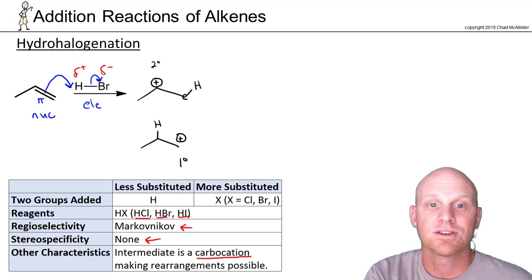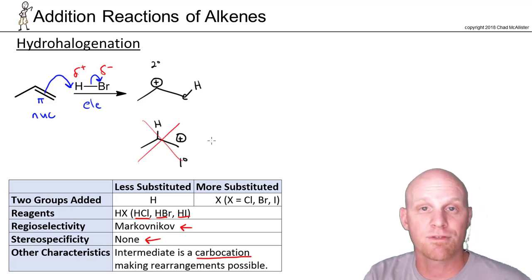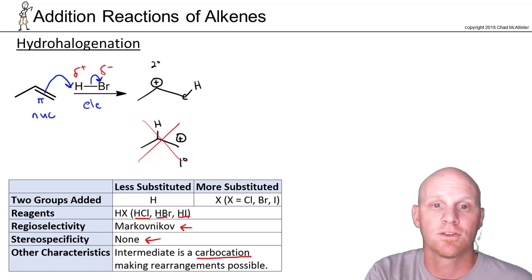so your secondary carbocation is more stable. We'll run the major synthetic route through that secondary carbocation. We won't consider the primary one at all. We are also going to form a bromide ion here.